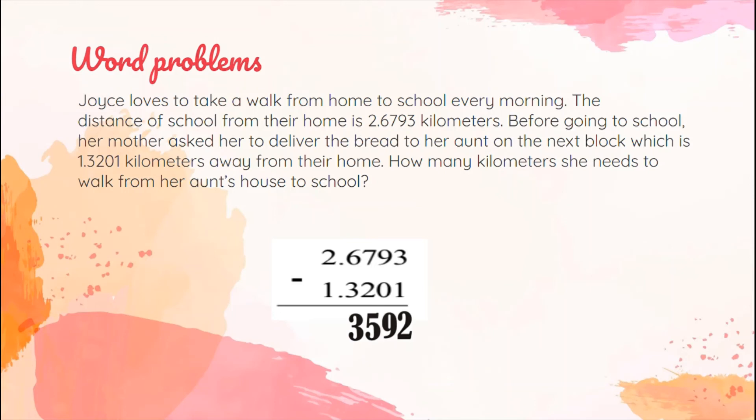Don't forget to align the decimal point. It's very important because without the decimal point, then our answer will be wrong. 2 minus 1, the answer is 1. So the distance Joyce travels is 1.3592 kilometers.